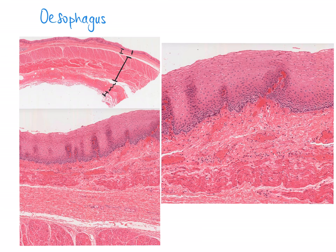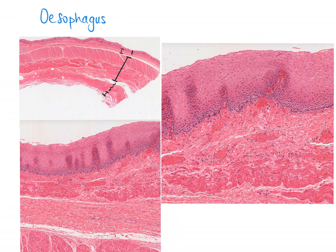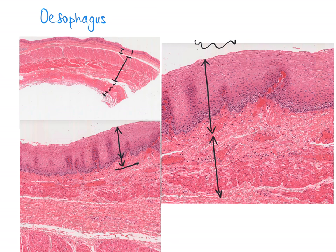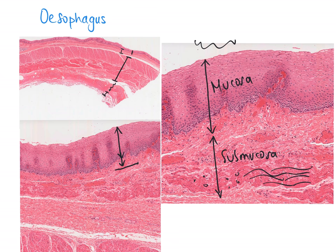Looking at images two and three in more detail: the mucosa layer is made up of lots of layers of flat cells — stratified squamous epithelium — to protect against abrasion and bacteria. Beneath that is the submucosa layer, which is loose to dense connective tissue providing strength and support. It contains lots of bundles of collagen and fibroblasts which make collagen and elastin. Below that is the muscularis layer, which enables peristalsis — movement of food through the esophagus.